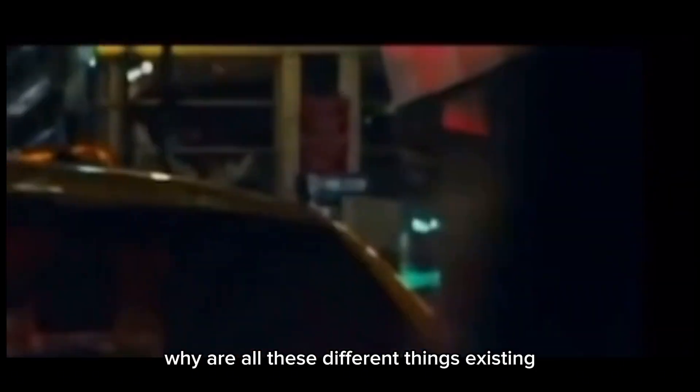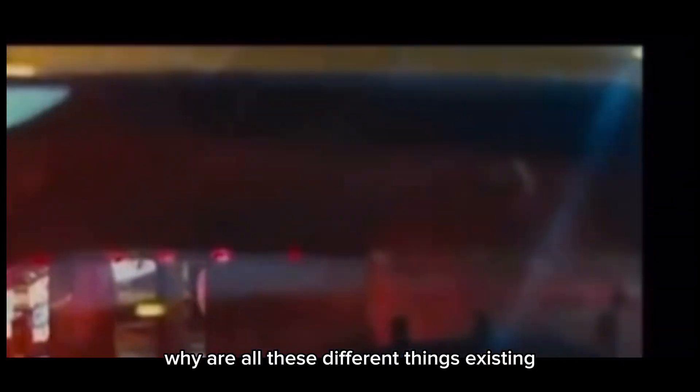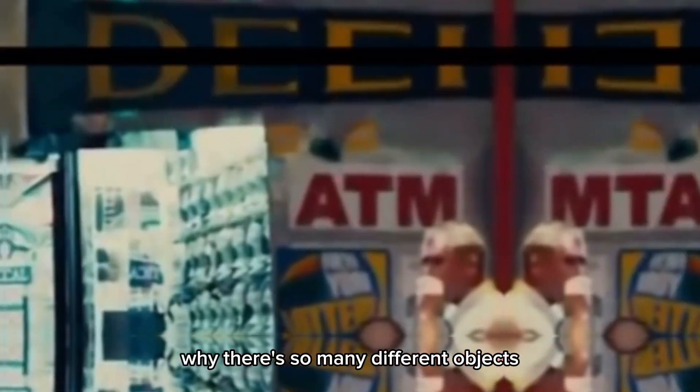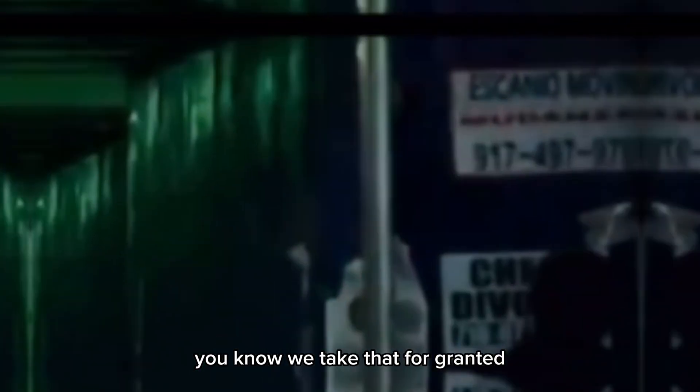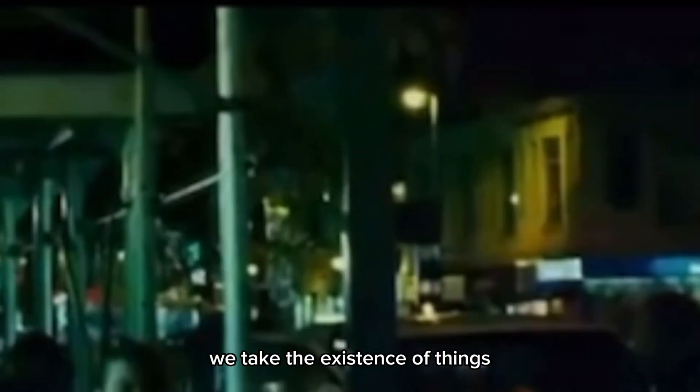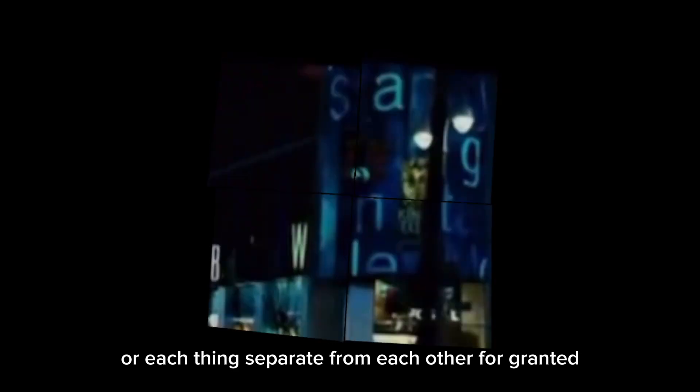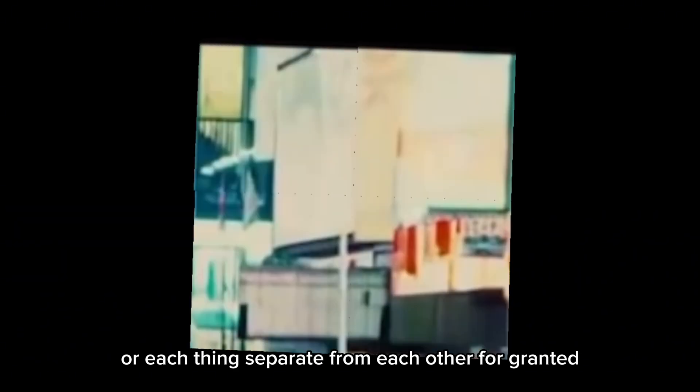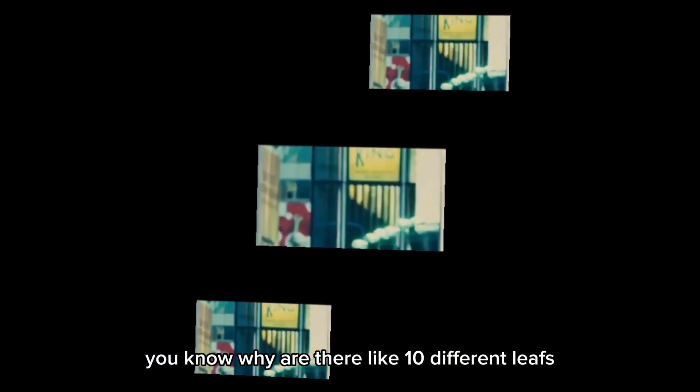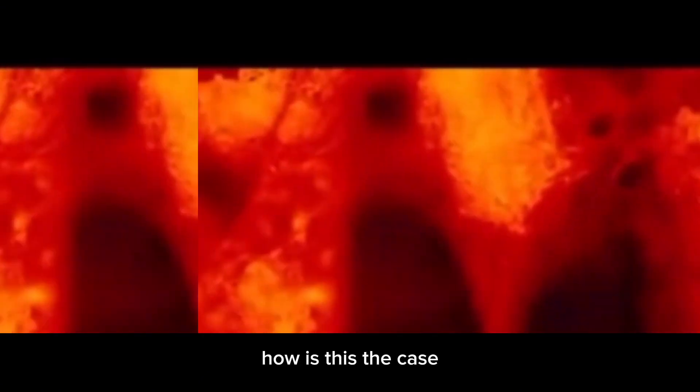So the question is, well, why are all these different things existing? Why are there so many different objects? We take that for granted. We take the existence of things differently from each other, or each thing separate from each other, for granted. Why are there like 100 different leaves on a tree? How is this the case?